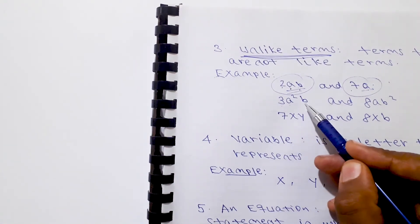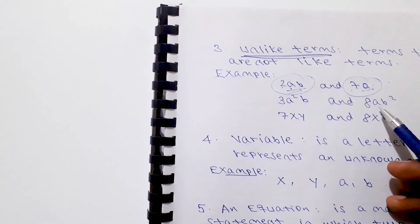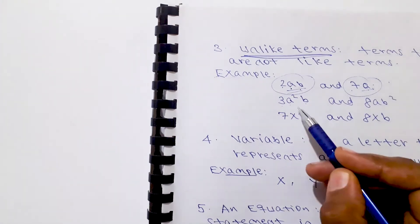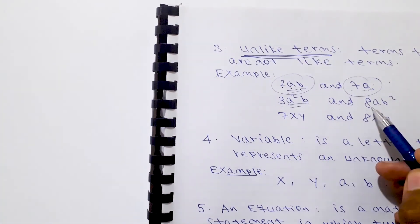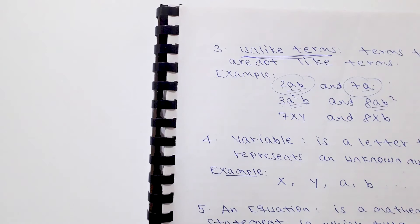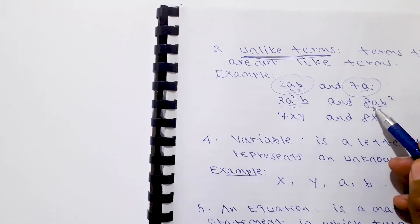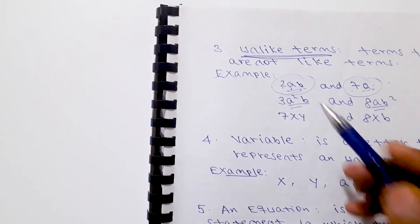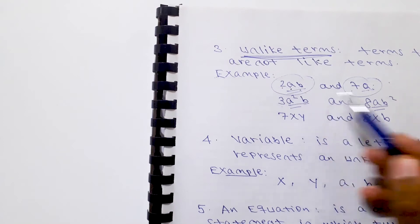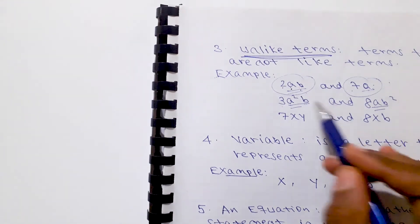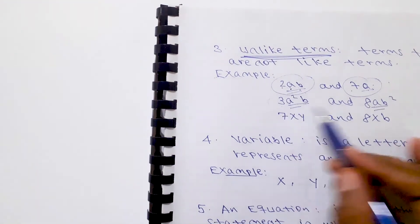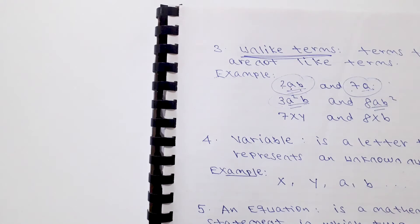Another example: a squared·b and 8·a·b squared — these are unlike terms. Look at the exponents: for a, one term has exponent 2 and the other has exponent 1; for b, one term has exponent 1 and the other has exponent 2. The exponents are not the same, so they are unlike terms.